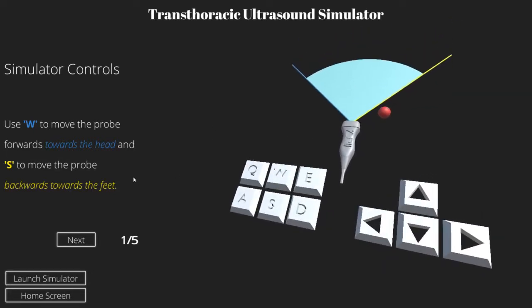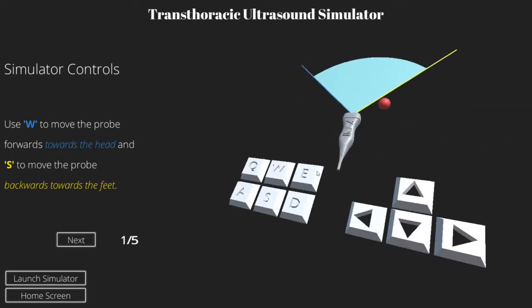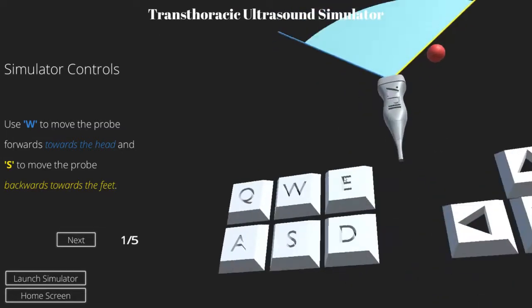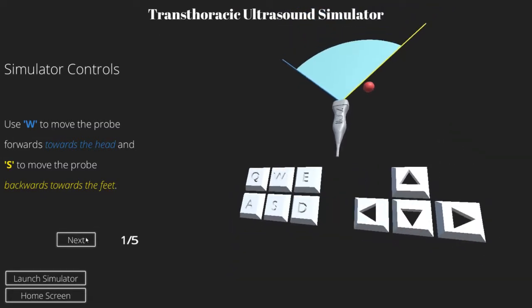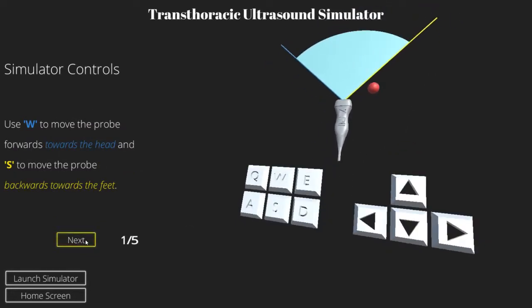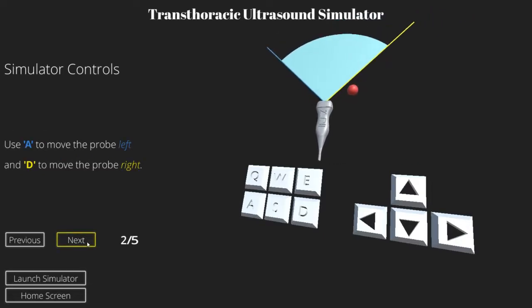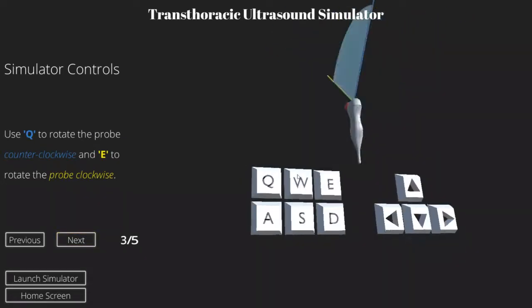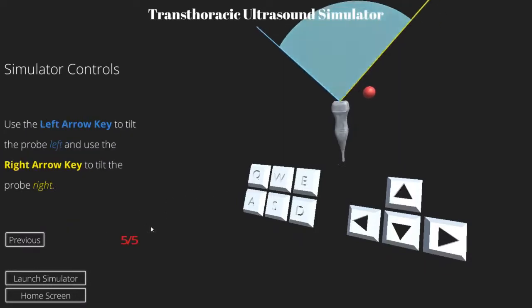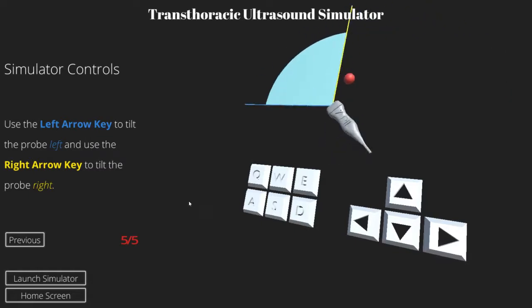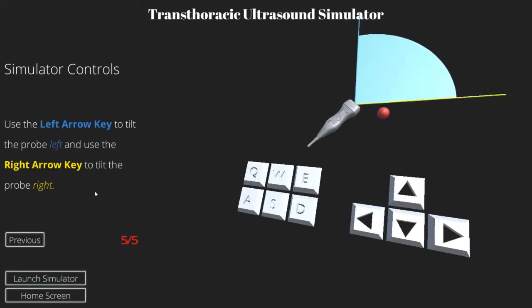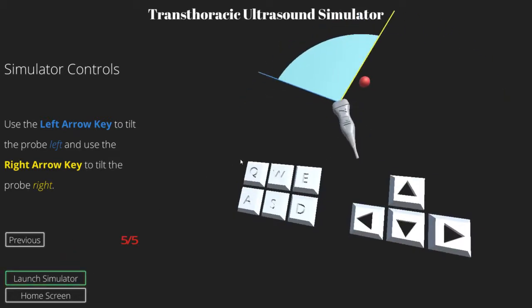So the first screen we're presented with is the simulator controls. This is also a 3D scene and you can play around with it if you want. The keys move so that you know which you're supposed to be hitting. W to move the probe towards the head and S towards the feet. A and D for left and right. Q and E to pitch the plane. Up arrow and down arrow to pitch the actual probe. Left arrow and right arrow to tilt the probe. Once we're comfortable with these video game-like controls, you can just launch the simulator.